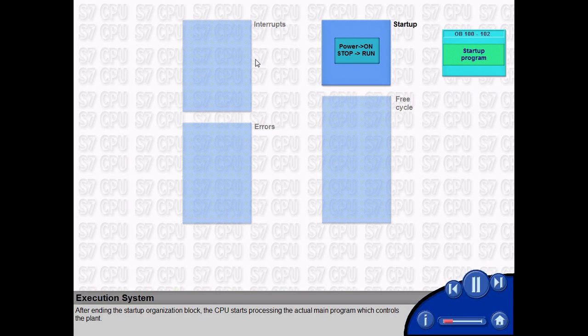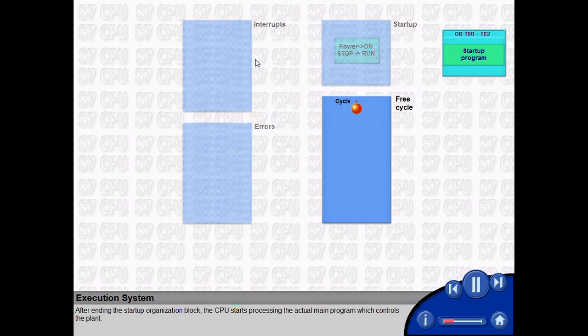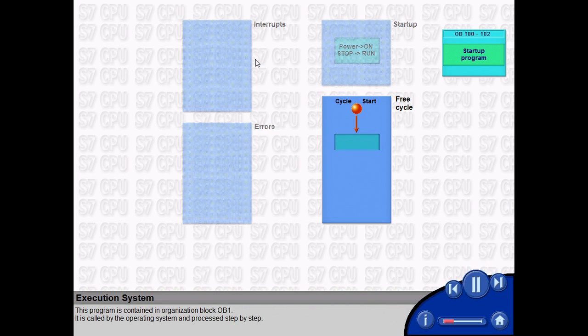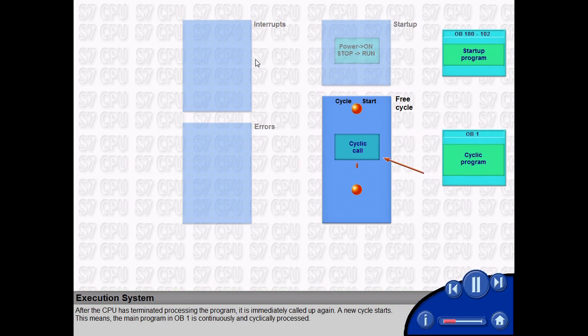After ending the startup organization block, the CPU starts processing the actual main program which controls the plant. This program is contained in organization block OB1. It is called by the operating system and processed step by step. After the CPU has terminated processing the program, it is immediately called up again. A new cycle starts.